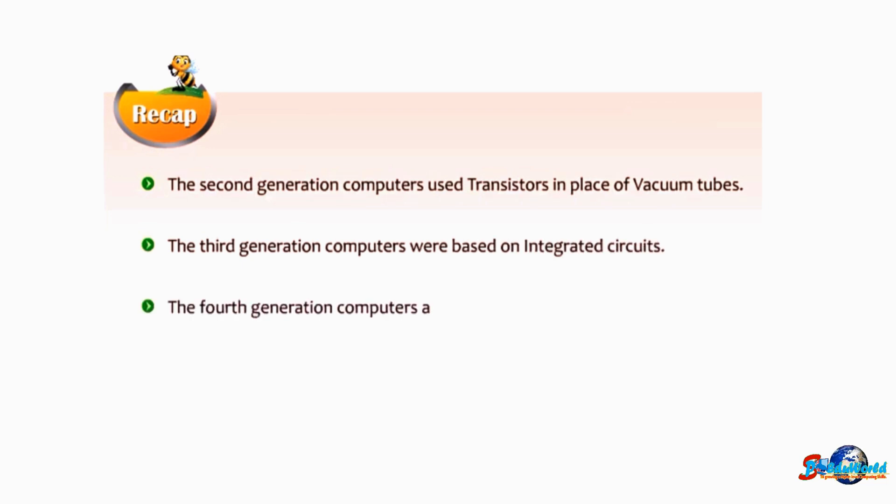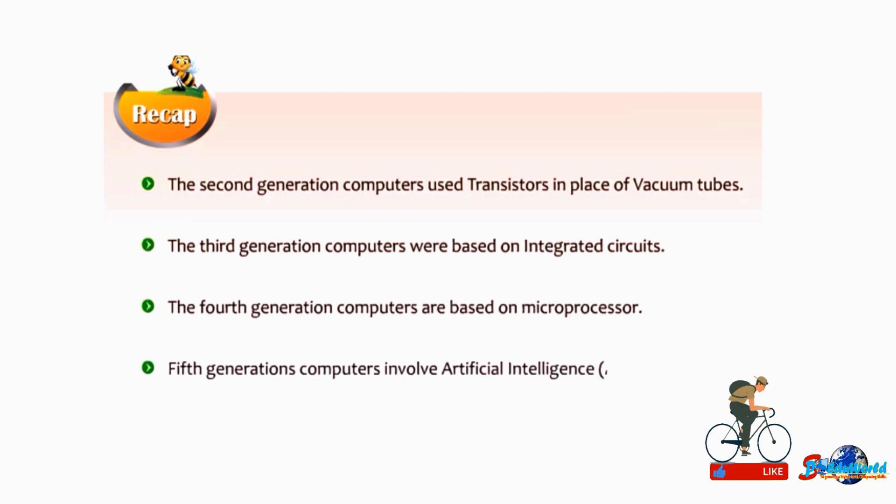The fourth generation computers are based on microprocessor. Fifth generation computers involve artificial intelligence (AI), where computers can behave, think, and react in the same way as humans do.